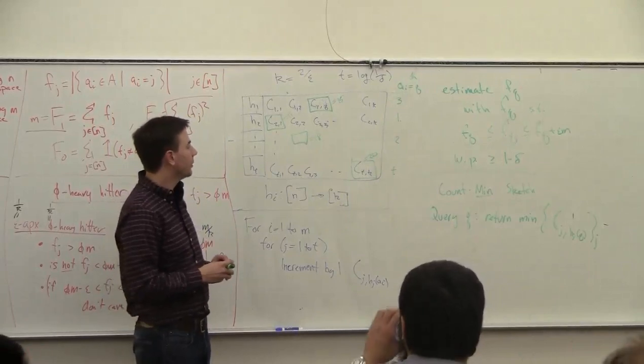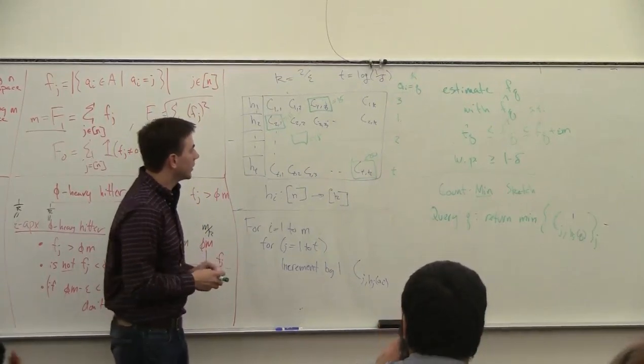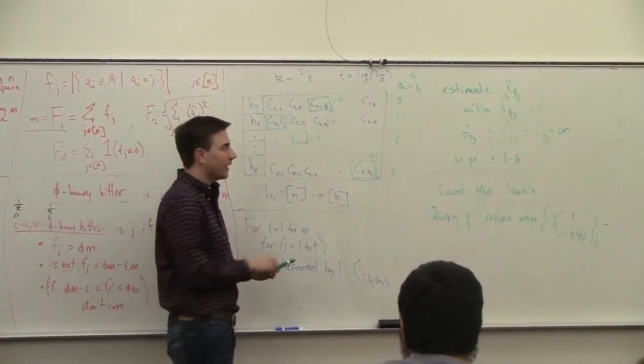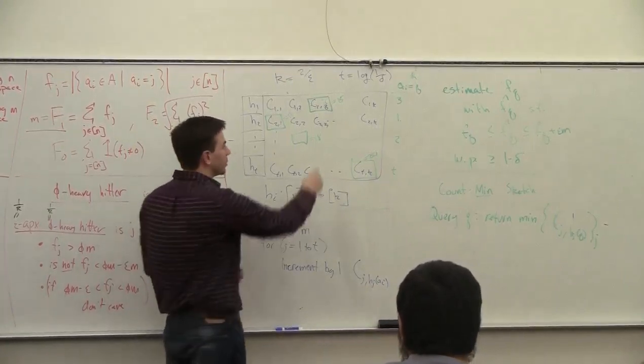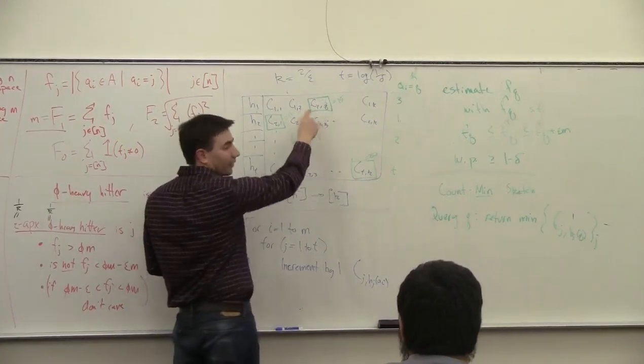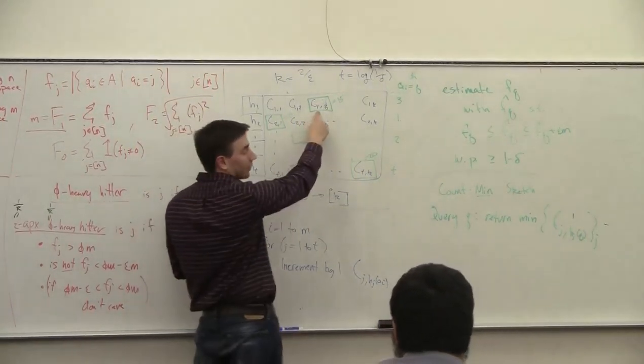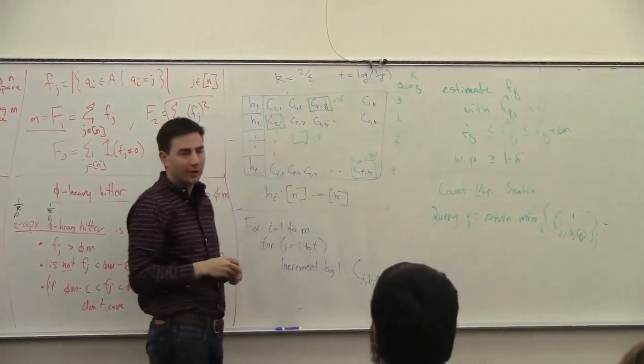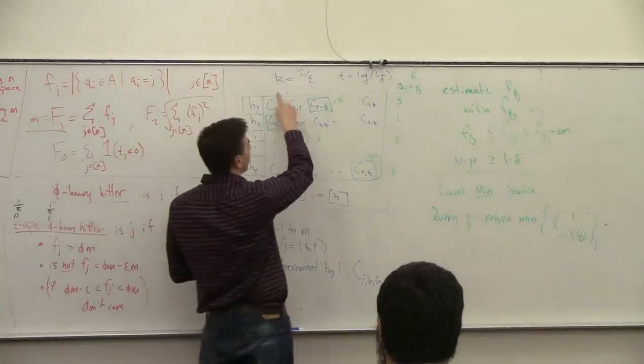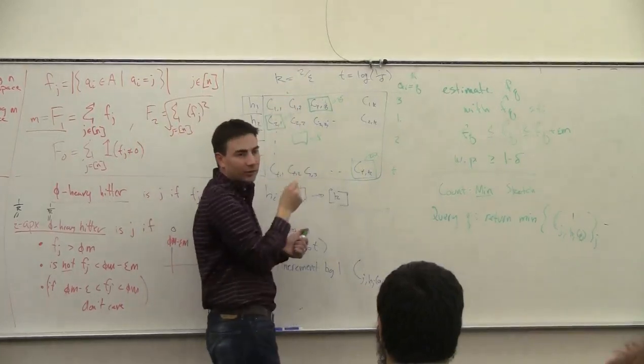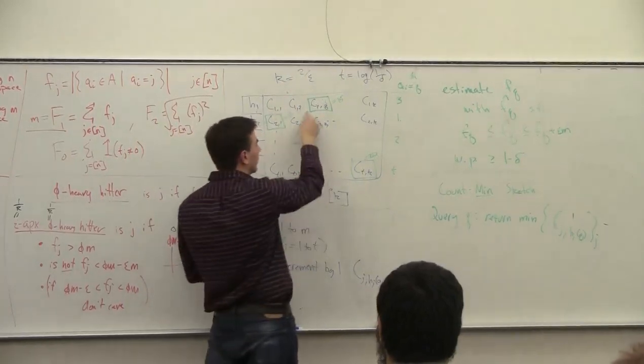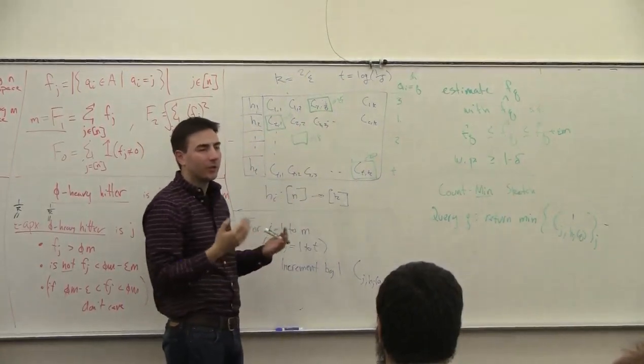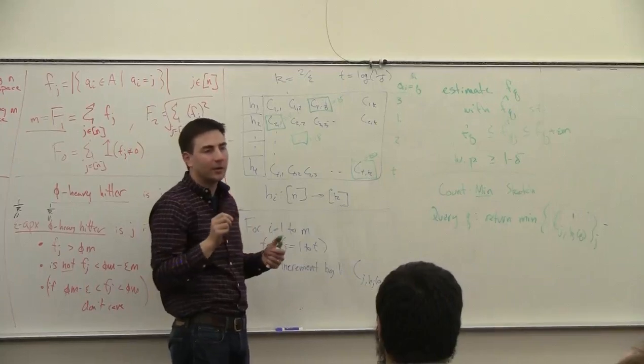Basically what you do is add up—each of the other elements not equal to q has some chance of causing error for each of the counters. If I look at the counter associated with q, each of the other elements has a chance of having error there. But the chance is going to be essentially 1 over k chance that all of those things go here. So that's going to be about an epsilon over 2 chance.